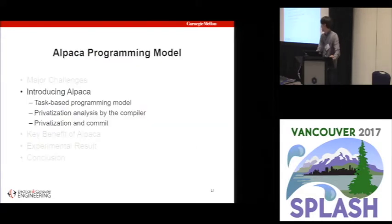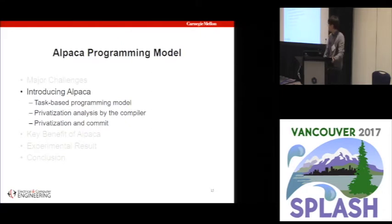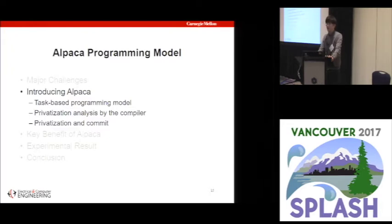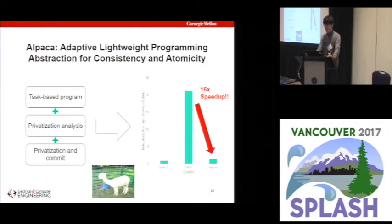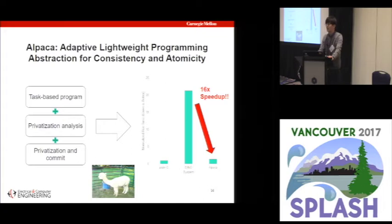We present a new programming model called ALPACA, which doesn't rely on traditional checkpointing. Instead, it relies on three key features: a task-based programming model, privatization analysis by the compiler, and privatization and commit by the runtime. These three features combine to give a speedup comparable to plain C runtime, rather than suffering more than 20x slowdown.